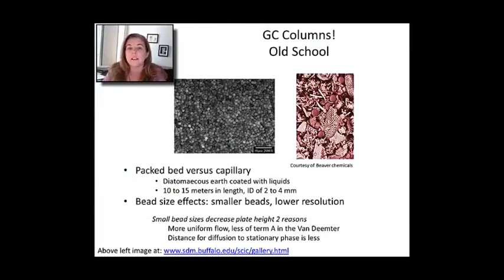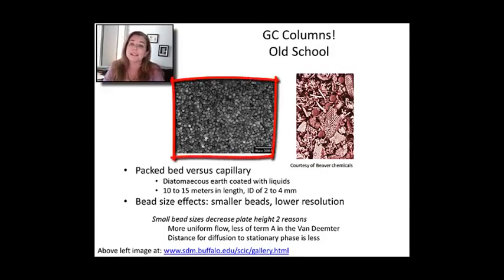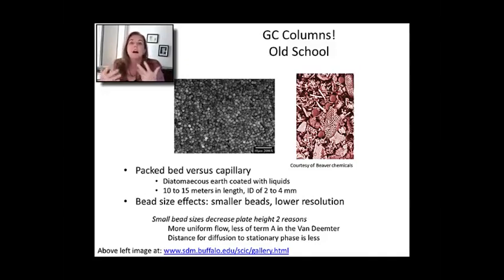One thing to realize about GC columns is that really cheap ones that you might find, let's say at a university that has an undergraduate lab and just needs to get a lot of work done, are probably going to be packed bed columns. So they'll either have really nicely shaped silica particles like little beads that sort of pack a thin column or literally they might be packed with dirt, better known as diatomaceous matter, and that's what's shown over here.